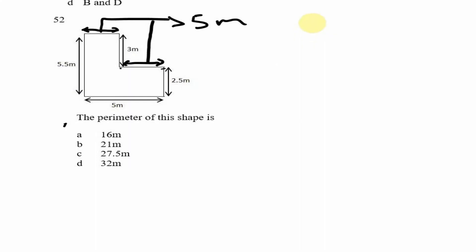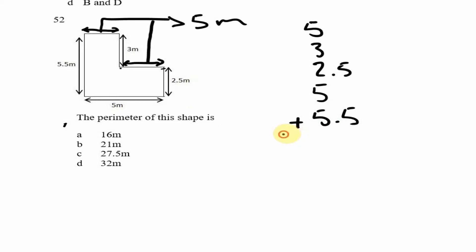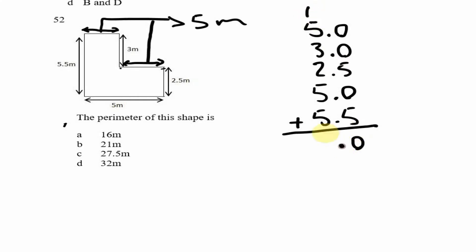Now we set up our addition: five plus three plus two point five, then five again, and five point five. Adding these up with decimal placeholders: five plus five is ten, write zero carry one; five plus five is ten, two plus three is five, so ten plus five is fifteen, plus five is twenty, plus one is twenty-one. Therefore our answer is 21 meters, which is option B.